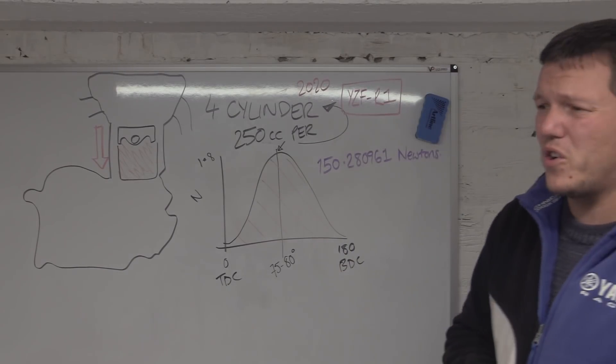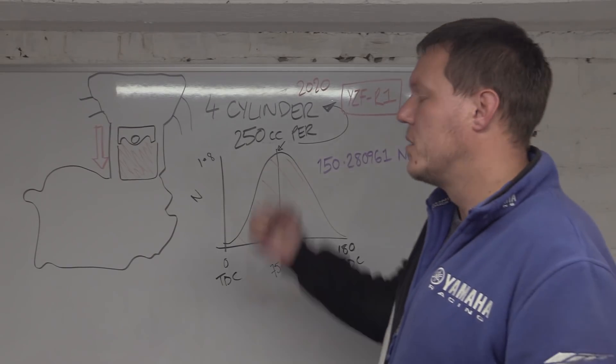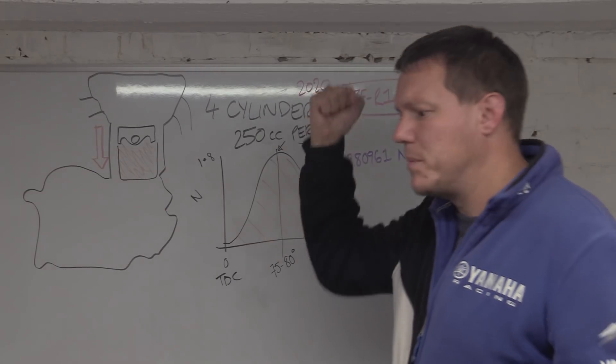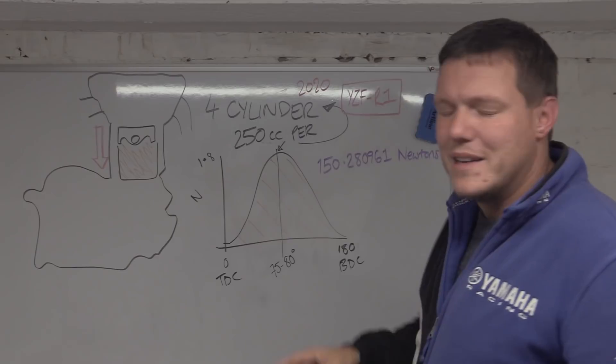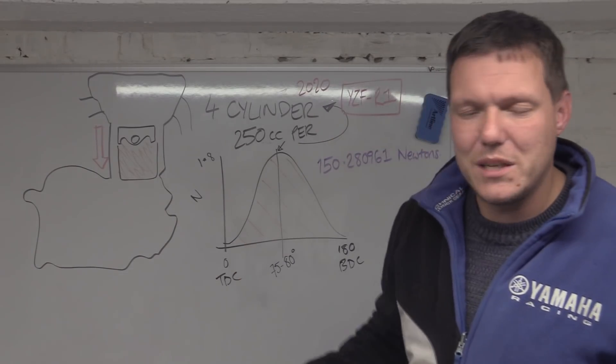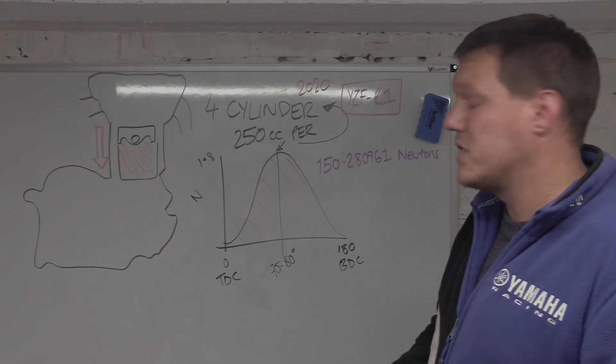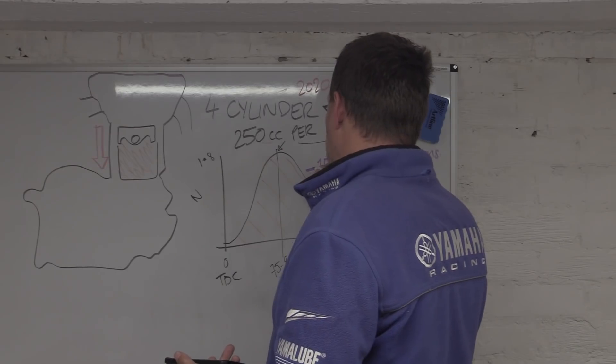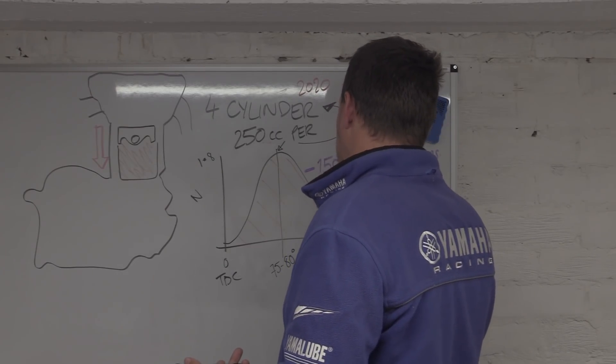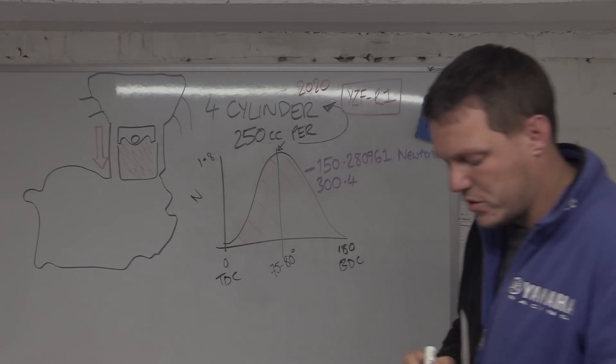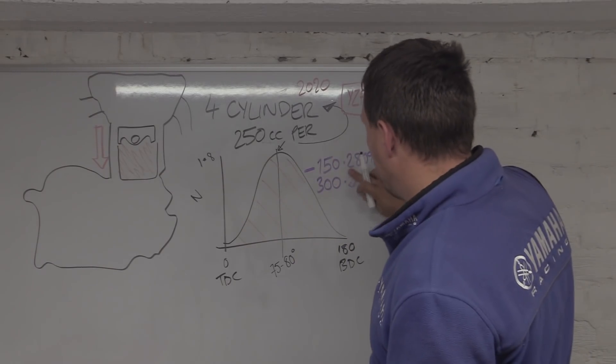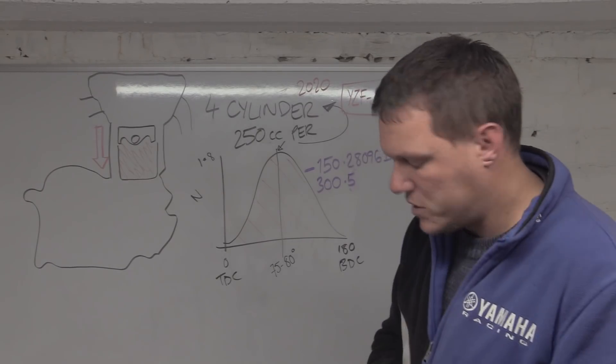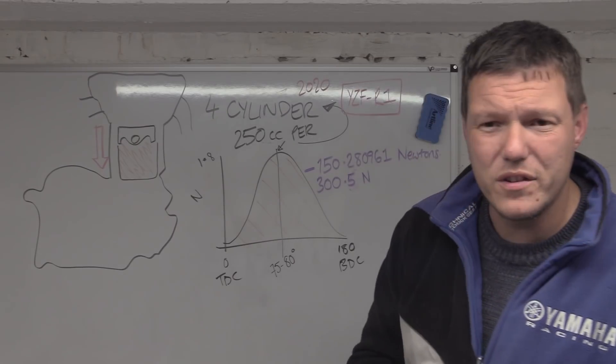When you look at the area under the curve and we work out all of this, it is 150.2809 something 61 newtons, which in layman's terms is fuck all. Now we have two down strokes, we have the intake stroke and we have the power stroke. You might think to yourself, well the power stroke is being pushed down by the expanding gases, yes, but there's still this resistive, the air doesn't disappear on the power stroke. Even though it's against it, it is a subtractive force, so basically you just times this by two. We'll call it 300.5 newtons.